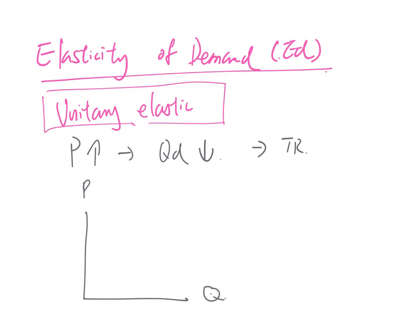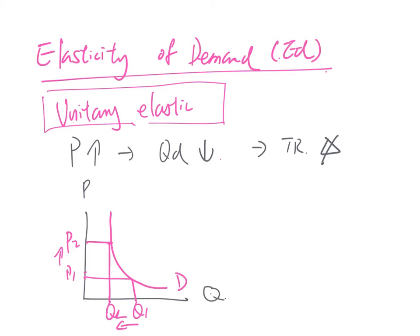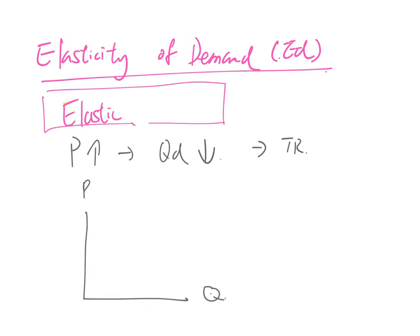For unitary elastic demand, the percentage change in price and the percentage change in quantity demanded are equal, so total revenue stays unchanged. In the diagram, using a curved demand curve, when the price increases from P1 to P2 and quantity decreases from Q1 to Q2, the plus area next to the price increase is almost the same as the minus area next to the quantity decrease.